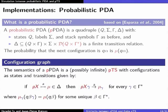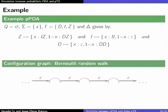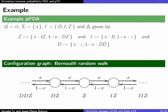The configuration graph is an infinite probabilistic transition system whose states are the configurations, similar to ordinary PDAs. For the example, the state space turns out to be a Bernoulli random walk: from Z with probability x you push Y and go right; from Y you can push another Y with probability x, continuing rightward, forming a doubly infinite sequence.